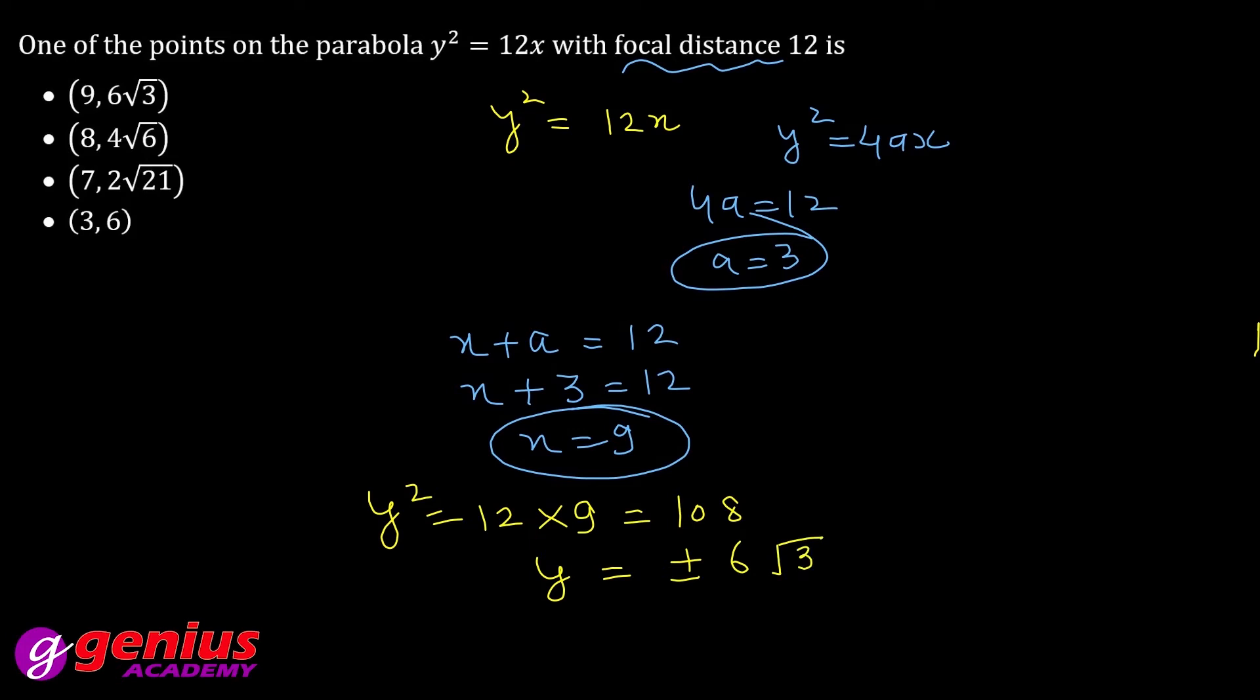So how much is your x value? X value is 9. To find y value, put x equals 9 in parabola equation: y squared equals 12 times 9, equals 108, so y equals plus minus 6 root 3. So this one is the final answer: (9, 6√3).